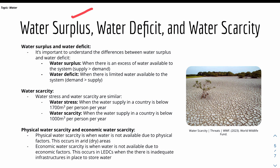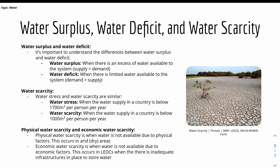Now we have water surplus, water deficit, and water scarcity. Water surplus is when there's an excess of water available to a system, where supply is greater than demand. Water deficit is the opposite — where demand for water is greater than supply. Water stress is when the water supply in a country is below 1,700 m³ per person per year, whereas water scarcity is when the supply is below 1,000 m³ per person per year, making it more serious.